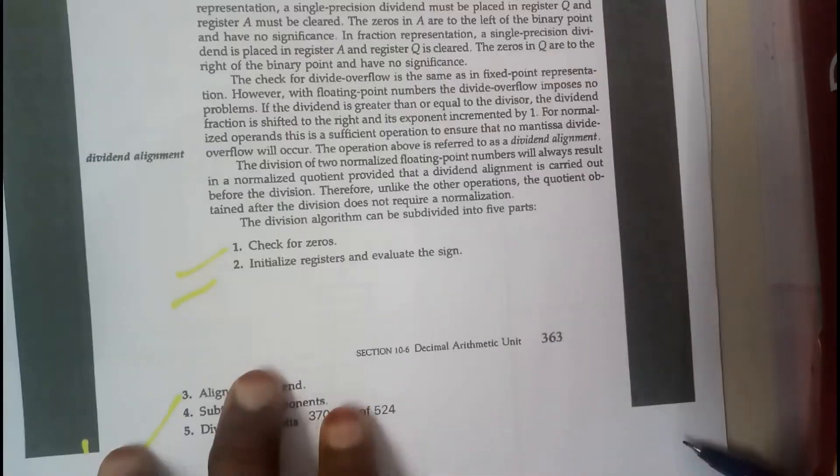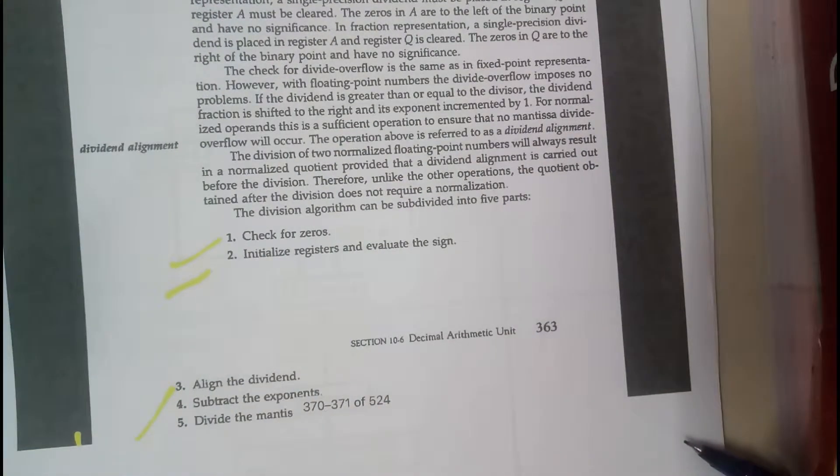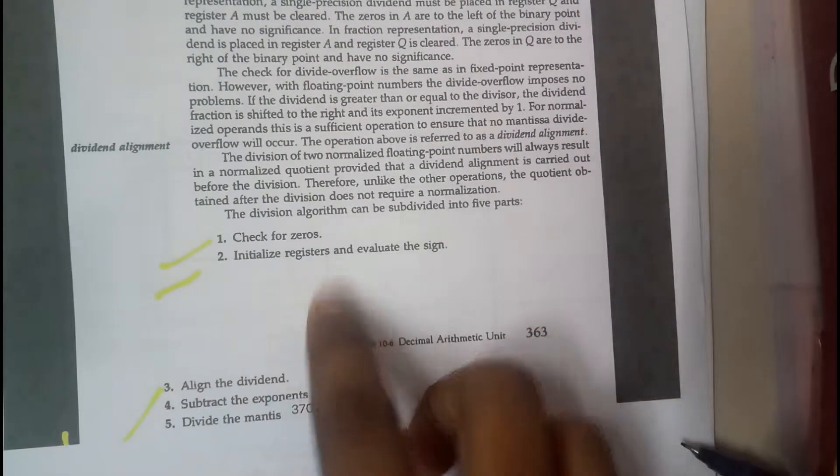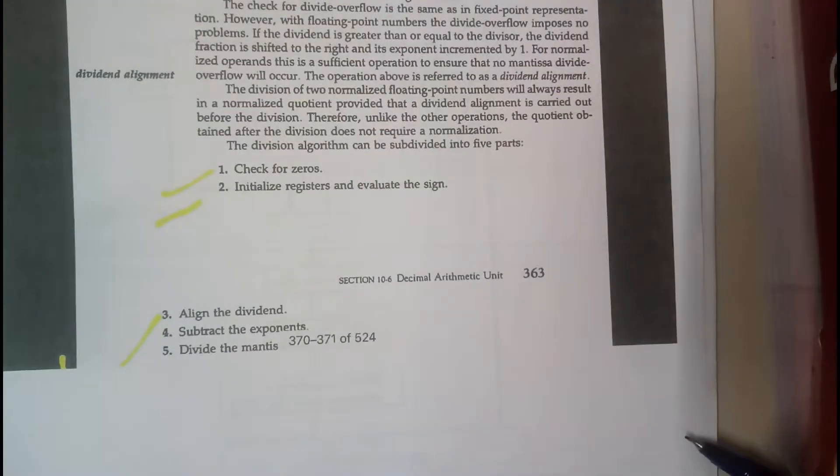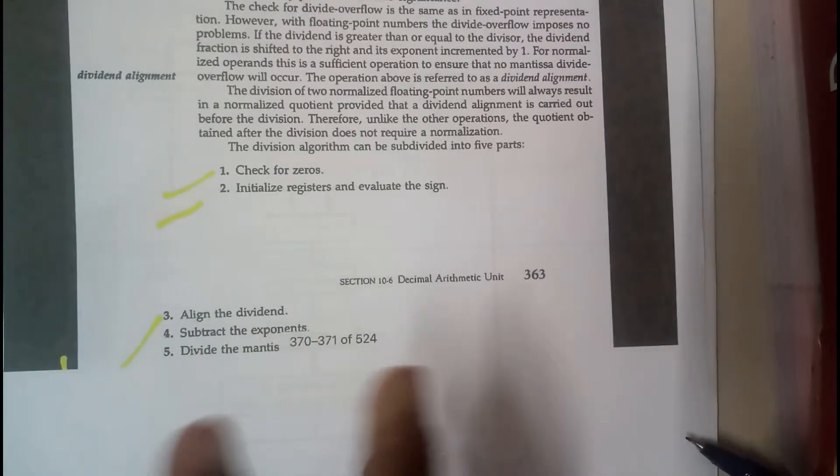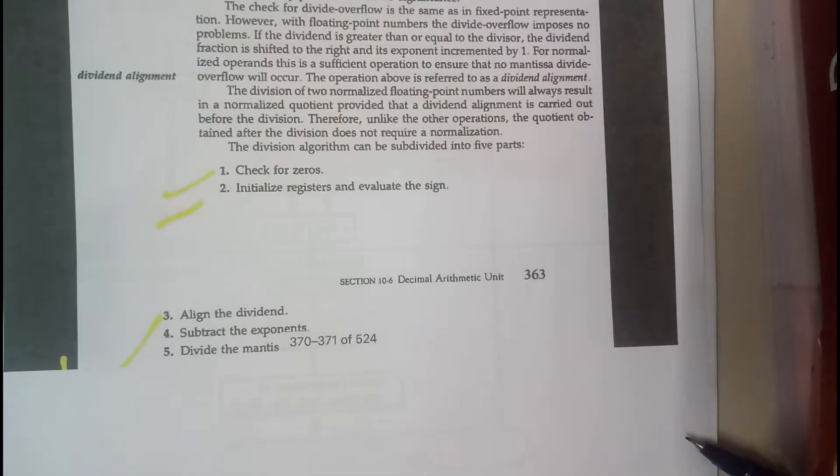The first step is checking for zeros as in the previous steps. You will be evaluating the signs and assigning the registers for particular tasks. You will also align the dividends - if there are any unwanted zeros, you will be shifting it to right or left and doing some operations on them.